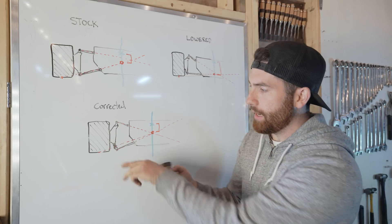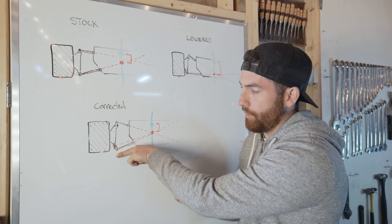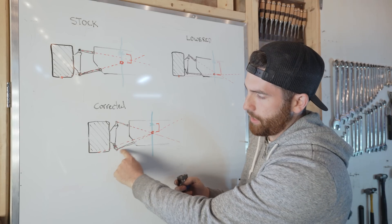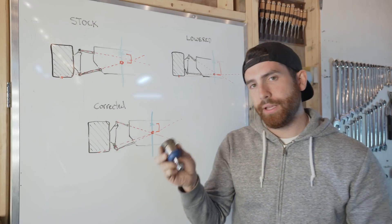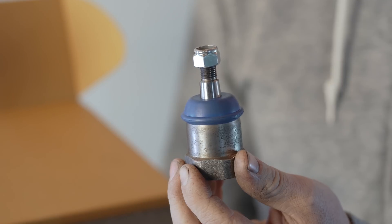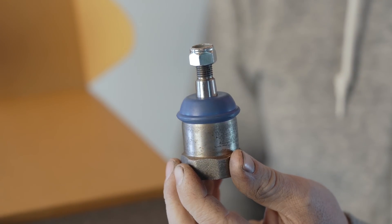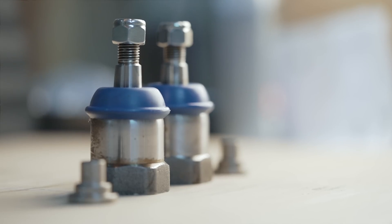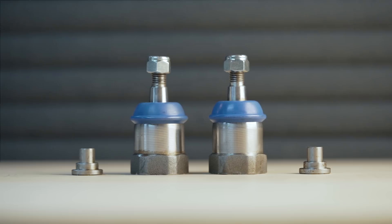So what this does, it threads onto your hub on the lower ball joint and actually lowers the outboard pickup point of the lower control arm. This is how we get this angle here. The nice thing about these also is that they are pre-sealed, you don't have to shim them.